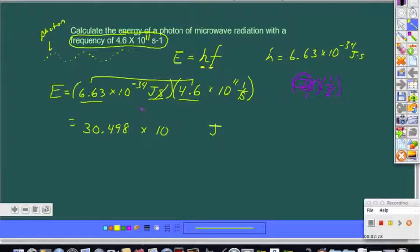Well, now we'll work with exponents. So looking at negative 34 and 11, what we do with exponents when we're multiplying numbers in scientific notation is that we add them. So negative 34 plus 11 actually gives us an exponent of negative 23.